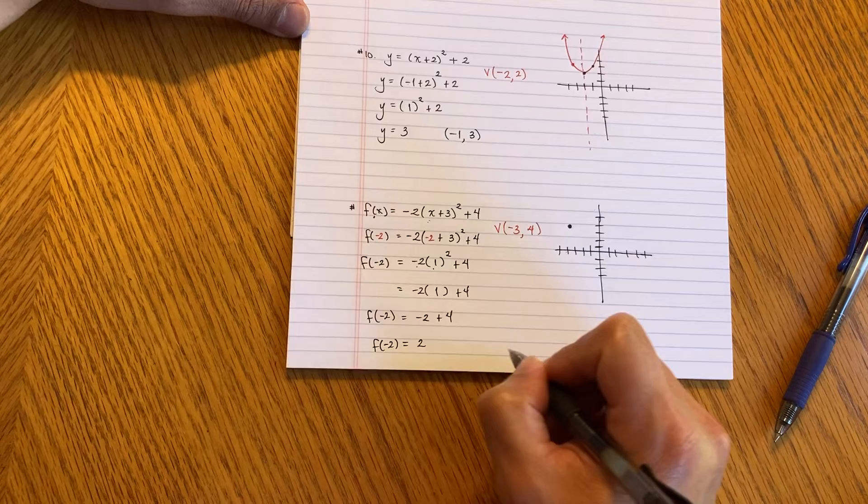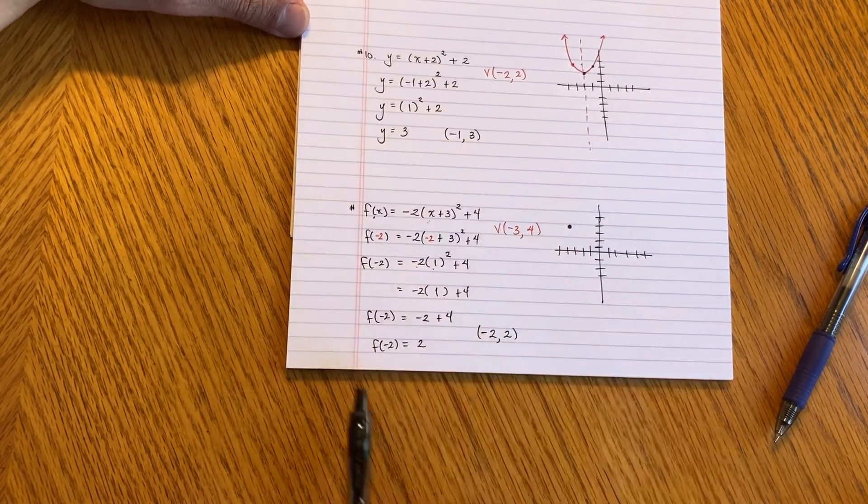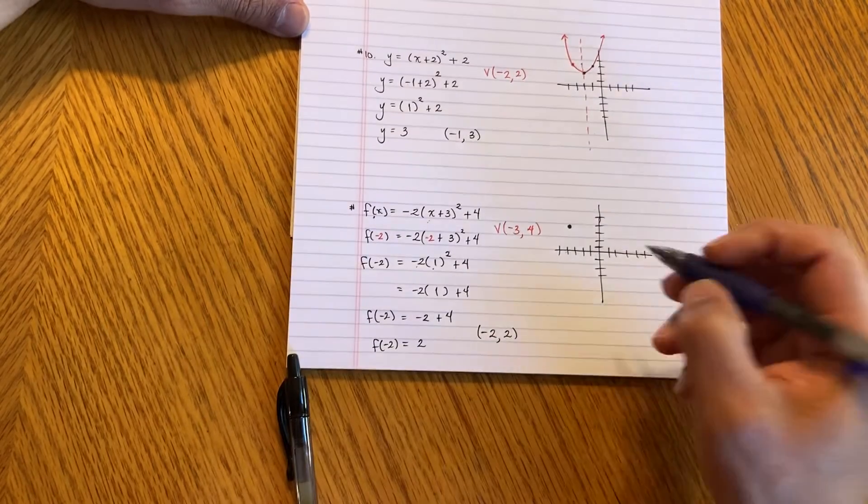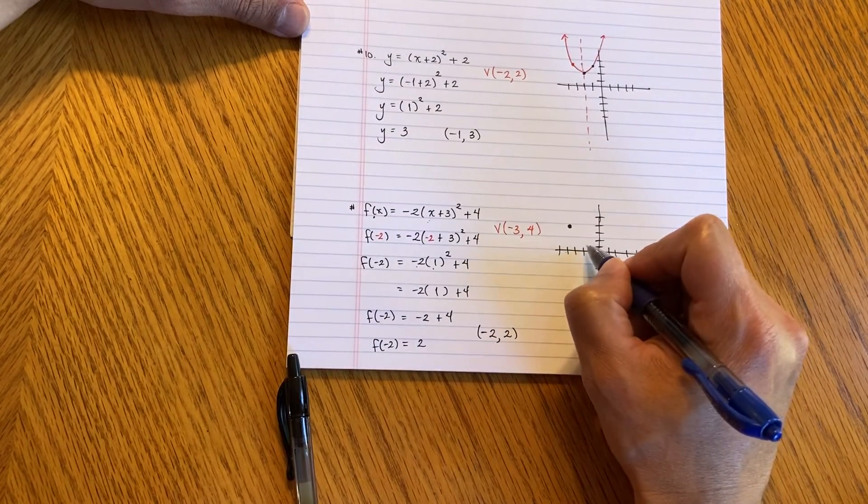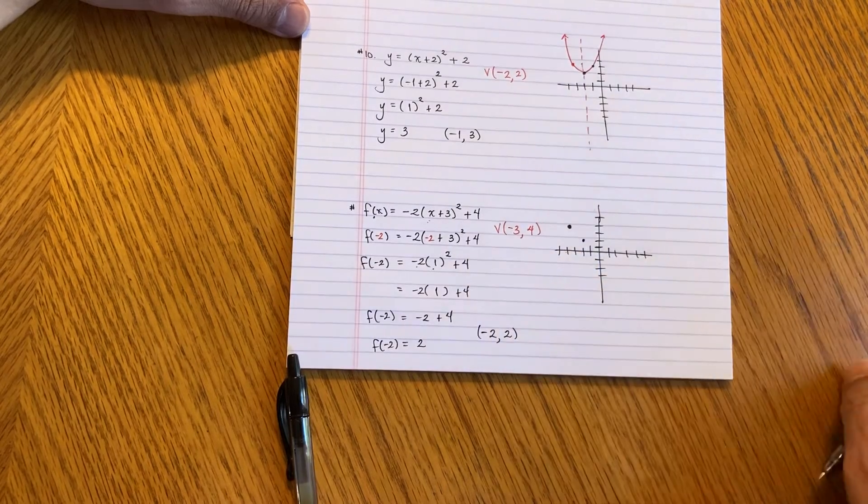And that's our point. So our point, by plugging in negative 2 for the X coordinate, I get positive 2. And then I'm going to come over here. Negative 2, negative 2, positive 2 is right about here.